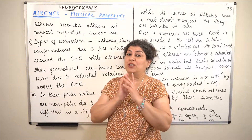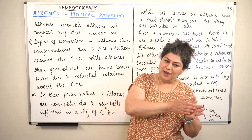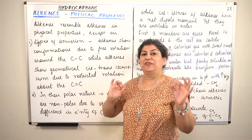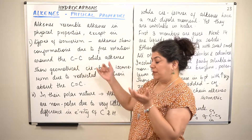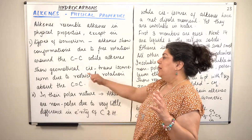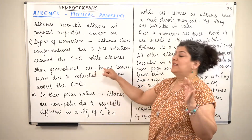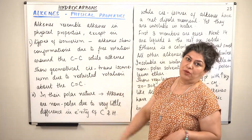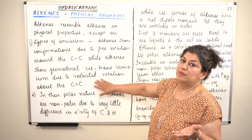Instead, we get geometrical isomers which are known as cis-trans isomers. Alkanes have a single carbon-carbon bond around which free rotation is possible. But in the case of alkenes, they do not have free rotation around the carbon-carbon double bond. Therefore, they show only cis-trans isomers. So cis-trans isomerism is only seen in alkenes.